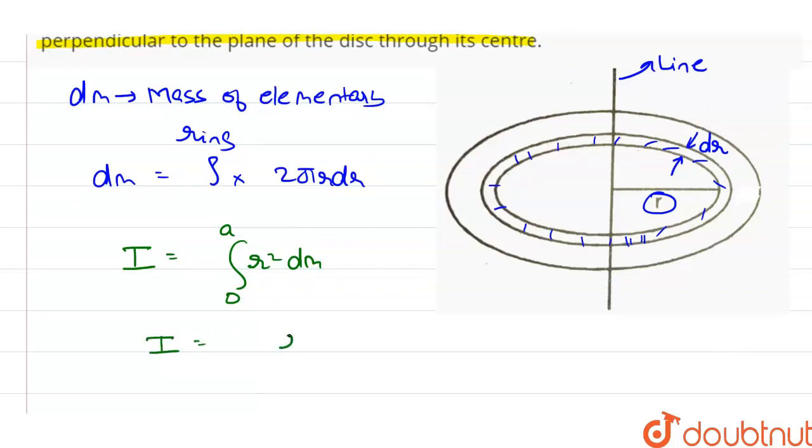Substituting the values, we get r² ρ, which can be written as (A + Br) 2πr dr, integrated from 0 to a.